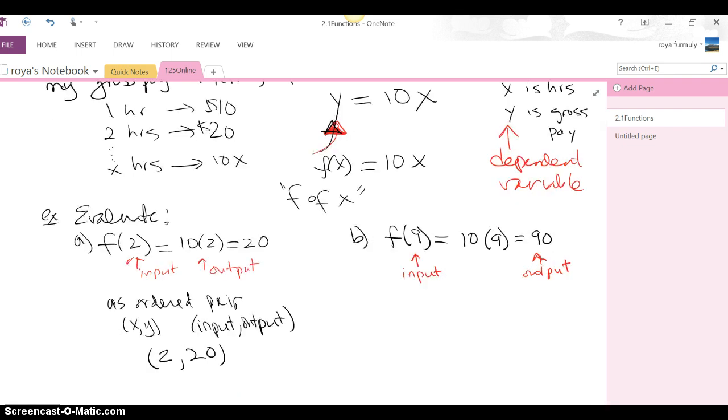So if we think of what we just did here in terms of an ordered pair, the input was the x value and the output was the y value. So this evaluation in part a gave us the ordered pair (2, 20). Similarly, if I look at part b, the input or the x value is 9 and the output or the y value is 90. So I can get a bunch of ordered pairs by evaluating this function f of x equals 10x where the input is really the hours and the output is the gross pay I get.